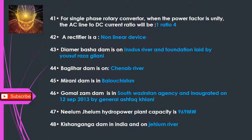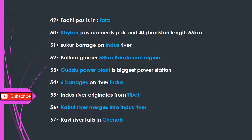Q45: Morani Dam is in Balochistan. Q46: Gomal Zam Dam is in South Waziristan Agency, inaugurated on September 12, 2013 by General Ashfaq Kayani. Q47: Neelum Jhelum hydropower plant capacity is 969 MW. Q48: Kishanganga Dam is in India on the Jhelum River. Q49: Tarbela is in — Attock. Q50: Khyber Pass connecting Pakistan and Afghanistan has a length of 56 km.